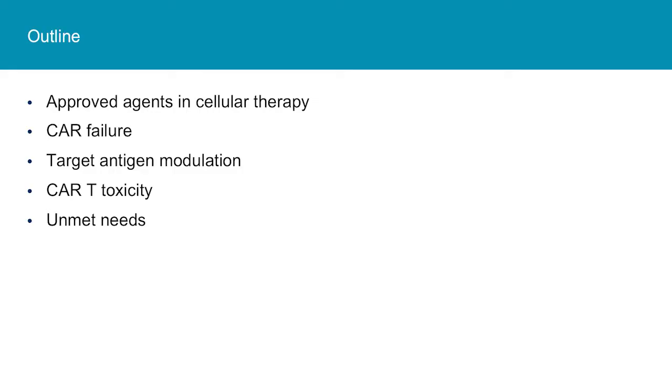In the red squares, you can see the different diseases where CAR T cell therapy has already shown brisk responses: ALL, CLL, diffuse large B cell lymphoma, and multiple myeloma. Using that as a jumping off point, I'd like to talk about a few exciting topics in CAR T cell therapy, including approved agents and agents probably coming soon to approval, failure in CAR T cell therapy, how the tumor changes itself to escape CAR T cell therapy, CAR T cell toxicity, and then unmet needs.